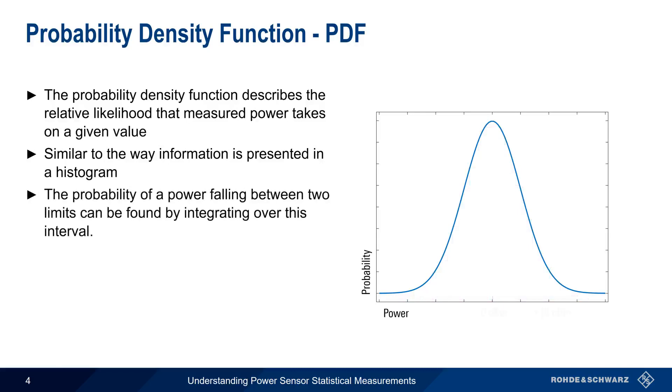Using a PDF, we can find the probability of measured power falling between two limits by integrating over this interval.